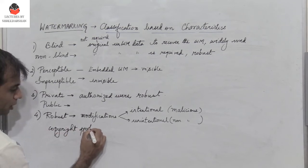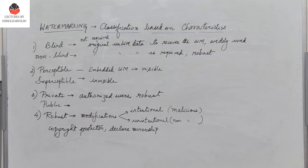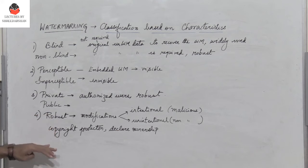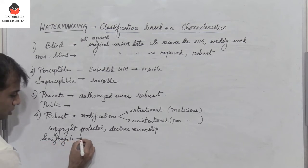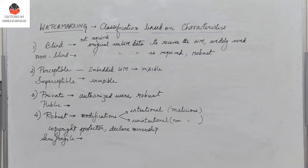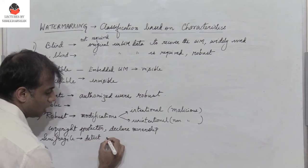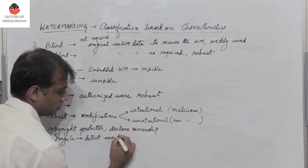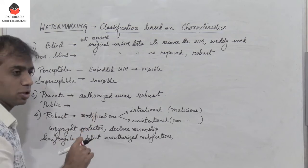Robust watermarks are used for copyright protection and to declare rightful ownership. Between robust and fragile, we also have semi-fragile watermarks. Semi-fragile watermarks are designed to detect unauthorized modifications using image processing operations, and they can be used for selective authentication — detecting illegitimate distortions while allowing legitimate ones.